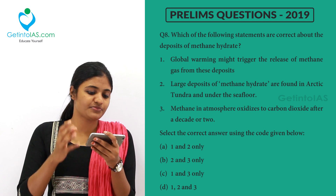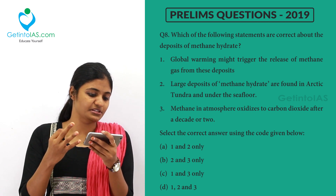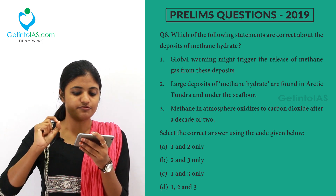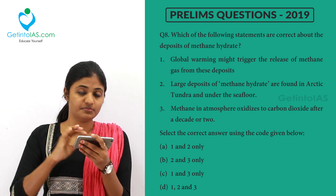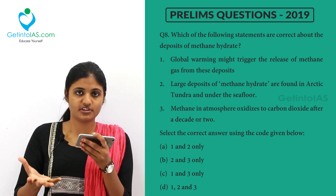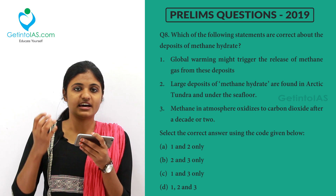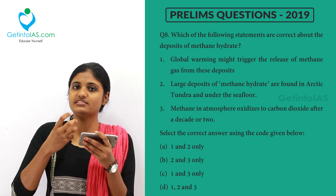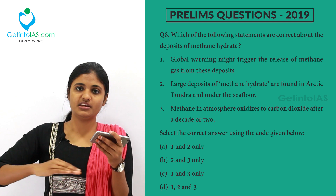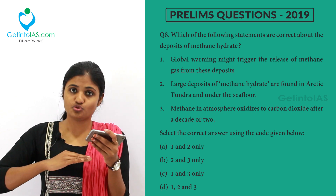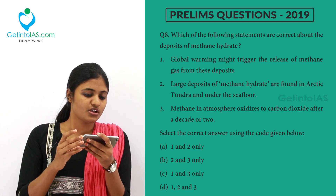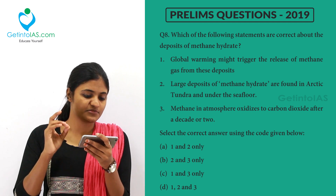Three statements are given. First: global warming might trigger the release of methane gas from these deposits. Due to the heating up of the atmosphere, ice caps, glaciers, and ocean ice are melting, and methane stored beneath is coming out. So the first option is definitely right.